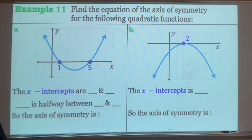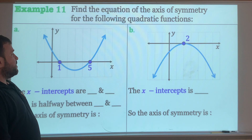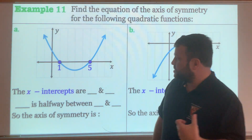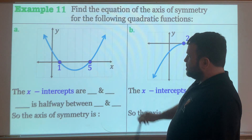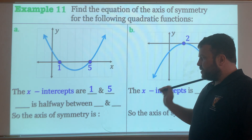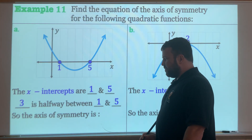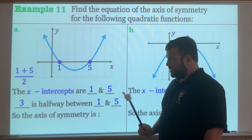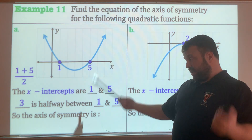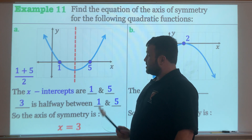Look at example 11 on page 20 of the package. Find the equation of the axis of symmetry for the following quadratic functions. The axis of symmetry lies halfway between the two x-intercepts. Here the x-intercepts are at 1 and 5. The number halfway between them is 3, because 1 plus 5 is 6, divided by 2 is 3 — it's like taking the average. So the axis of symmetry is x equals 3. You plot a dashed line right there at x equals 3.